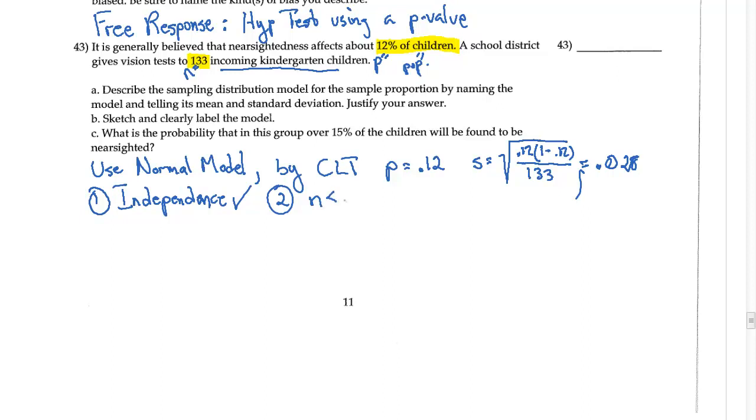Two, your sample size has to be less than 10% of the population. If I multiply this by 10, I get 1,300. I'm guessing there are more than 1,300 children in the world, in the United States, so that's good.